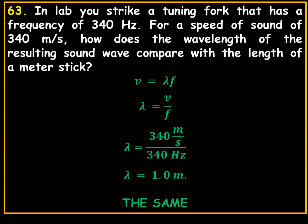Solve for lambda, and lambda equals the velocity over the frequency. The velocity is 340 meters per second, the frequency is 340 hertz, so 340 divided by 340, lambda equals 1 meter.